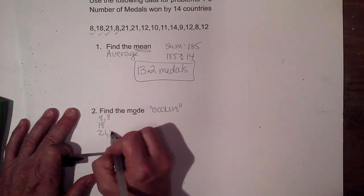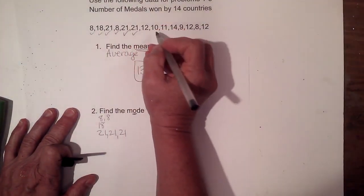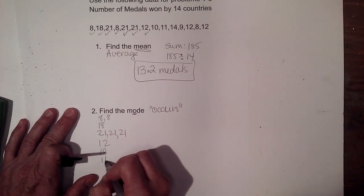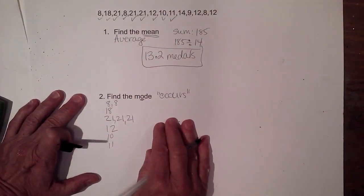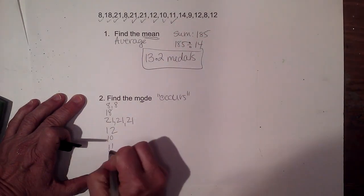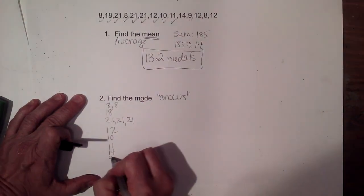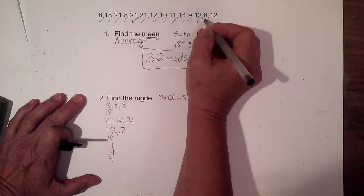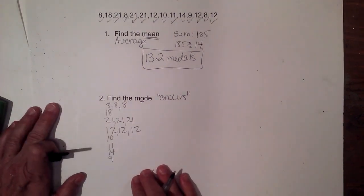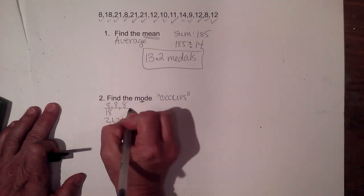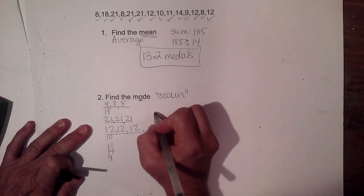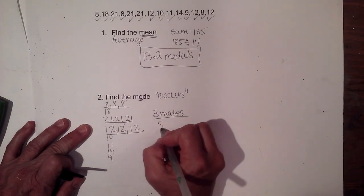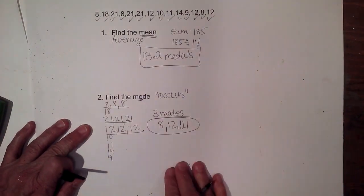Then we have a second 21 and a third 21. Then a 12, a 10 and 11 — those are new numbers — a 14, a 9, another 12, another 8, and a third 12. So what mode means is which data value occurs the most. I have three 8s, three 21s, and three 12s. So this one actually has three modes, because we have three numbers that each occur three times. The modes are 8, 12, and 21.